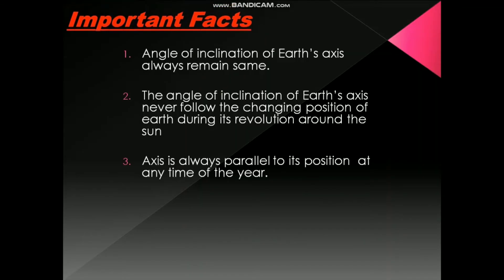Now some important facts. The angle of inclination of the earth's axis always remains the same. This tilt of 23.5 degrees from the vertical plane and 66.5 degrees from the orbital plane never changes. The inclination of the earth's axis never follows the changing positions of the earth during its revolution around the sun. At any point of the orbital plane, the axis is always parallel to its position at any other time of the year.